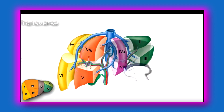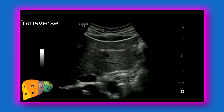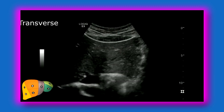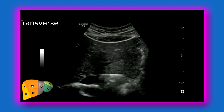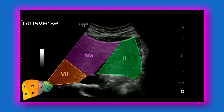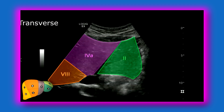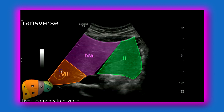In transverse, these are the superior segments of the liver — segment 2. You'll see you have segments 2, 4A, and 8. We're in the superior segments, scanning around this region, so 2, 4A, and 8.